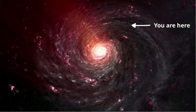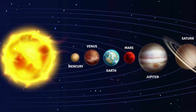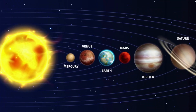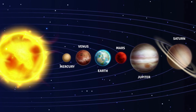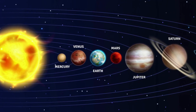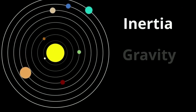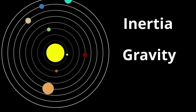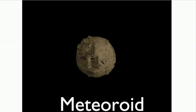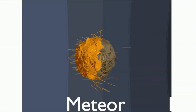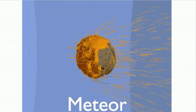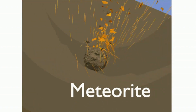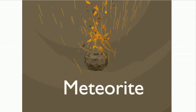You will describe the characteristics and movements of the planets in our solar system, explain the concept of gravity and inertia and their effects on celestial bodies, and identify and describe comets, asteroids and meteoroids and understand their significance.